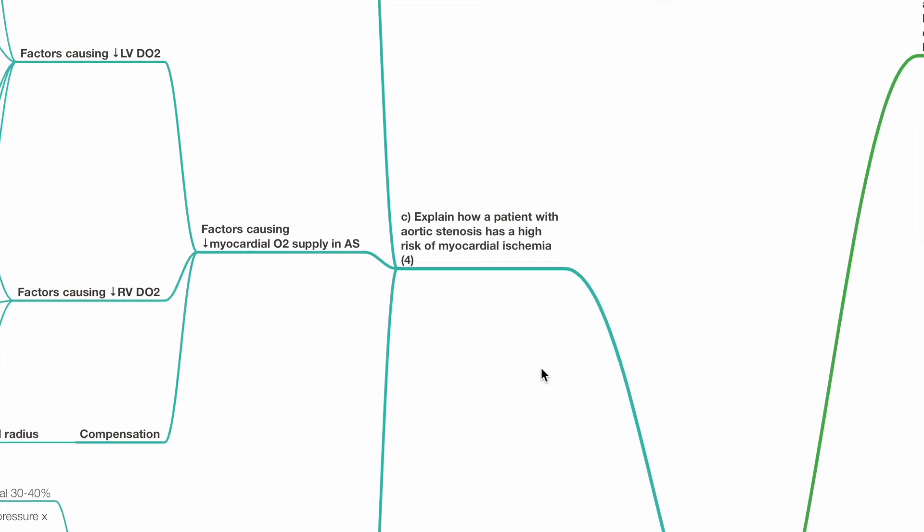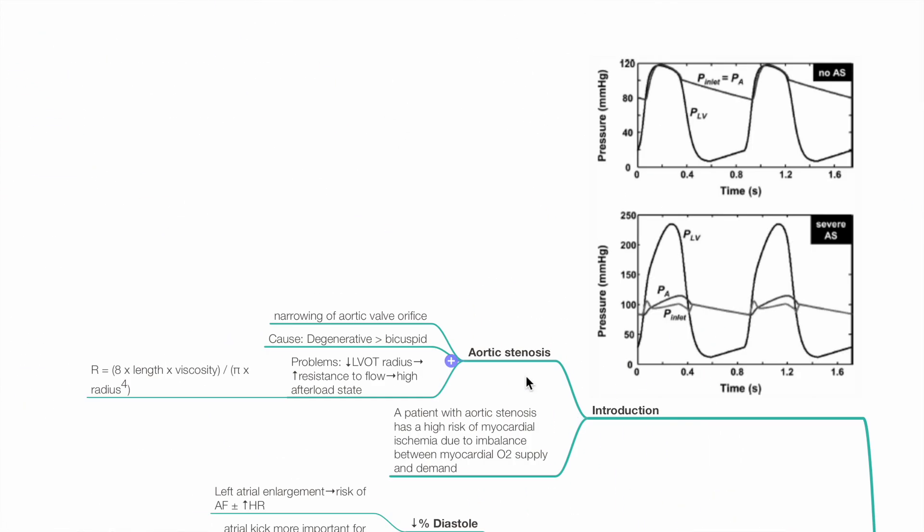Part C: Explain how a patient with aortic stenosis has a high risk of myocardial ischemia. Aortic stenosis refers to narrowing of the aortic valve orifice, which may be due to degenerative rheumatic heart disease or bicuspid aortic valve. With reduced left ventricular outflow tract radius, there is increased resistance to flow and a high afterload state.